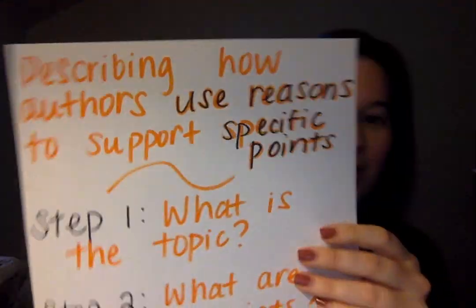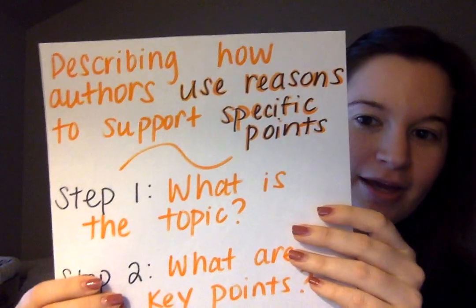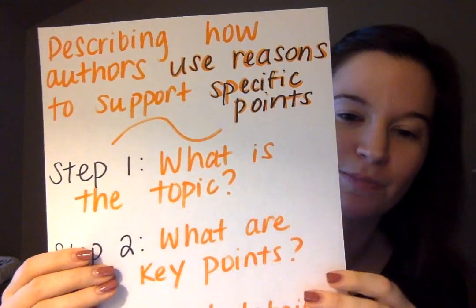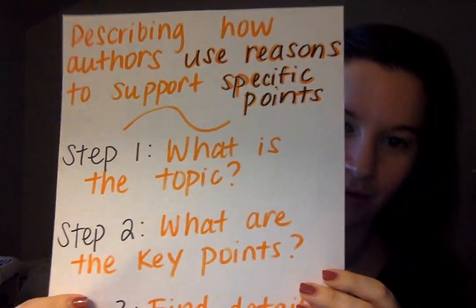Hi friends, thank you for making it to part two of our lesson today. I'm so excited to jump into the skill that we're going to be learning about. Remember we just read the text about Ruby Bridges, and the skill that we're practicing today is actually the same skill that we practiced yesterday. Today we are going to be describing how authors use reasons to support specific points.